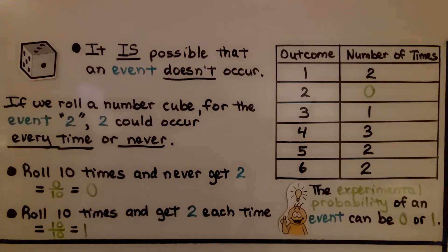We could also roll 10 times and get 2 each time. That's highly unlikely, but it could happen. That would be 10 out of 10 times, 10 tenths, which is equal to 1. So we could get a probability of 0 or 1. The experimental probability of an event can be 0 or 1.